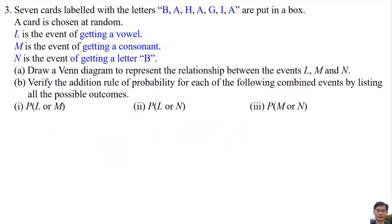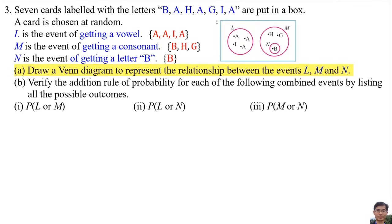Number 3: Seven cards labelled with the letters B-A-H-A-G-I-A are put in a box and a card is chosen at random. L is the event of getting a vowel. M is the event of getting a consonant, so the elements are B, H, and G. N is the event of getting the letter A. Draw a Venn diagram to show the relationship between events L, M, and N, and apply the addition rule of probability for each combined event.